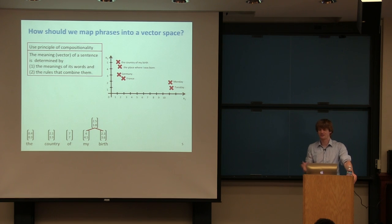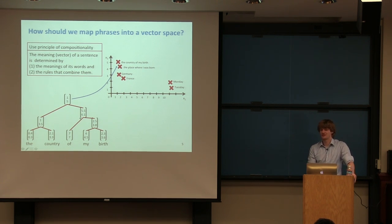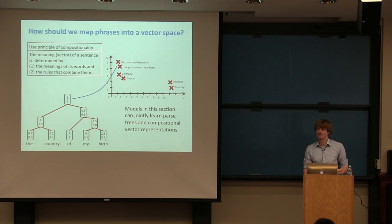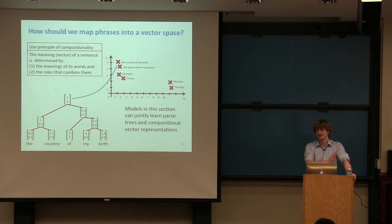'My birth' is by itself a syntactic phrase, and 'the country' is a noun phrase. 'Of my birth' is a prepositional phrase, so the word vector of 'of' will be combined with the phrase vector of 'my birth,' and so on. Ideally, the final resulting vector will be close to other countries in the single word vector space. These models conjointly learn parse trees and compositional vector representations that capture syntactic and semantic information of phrases.